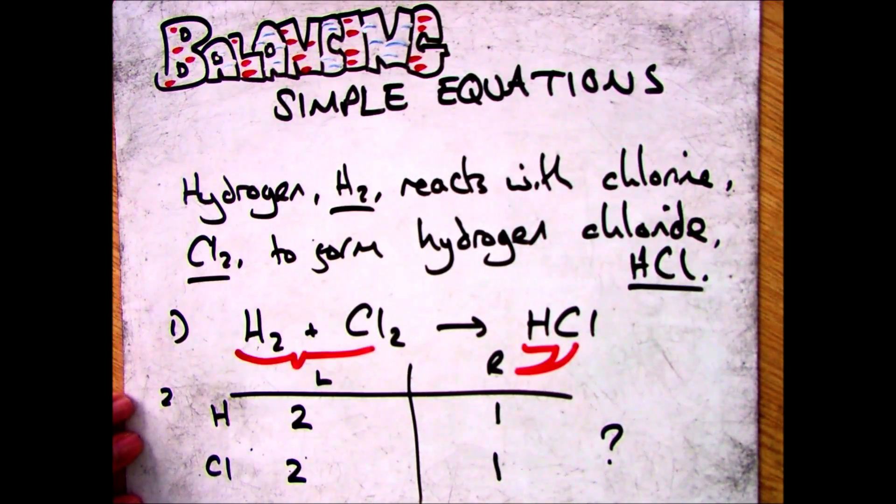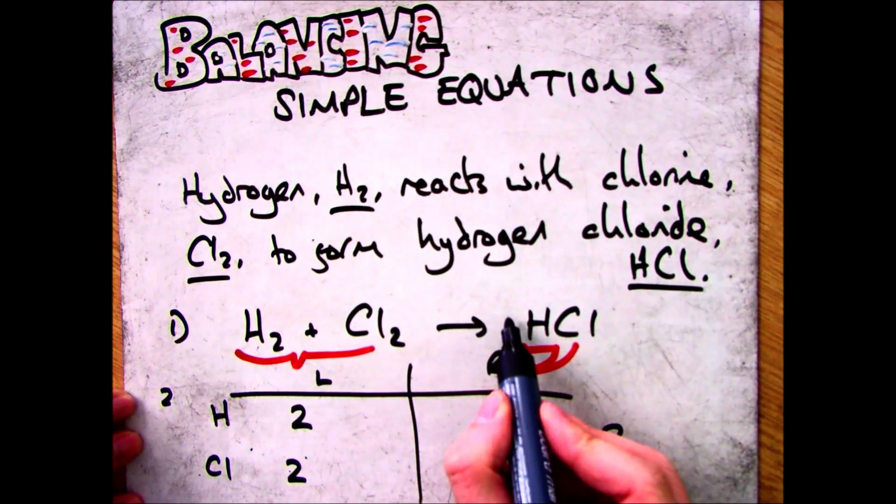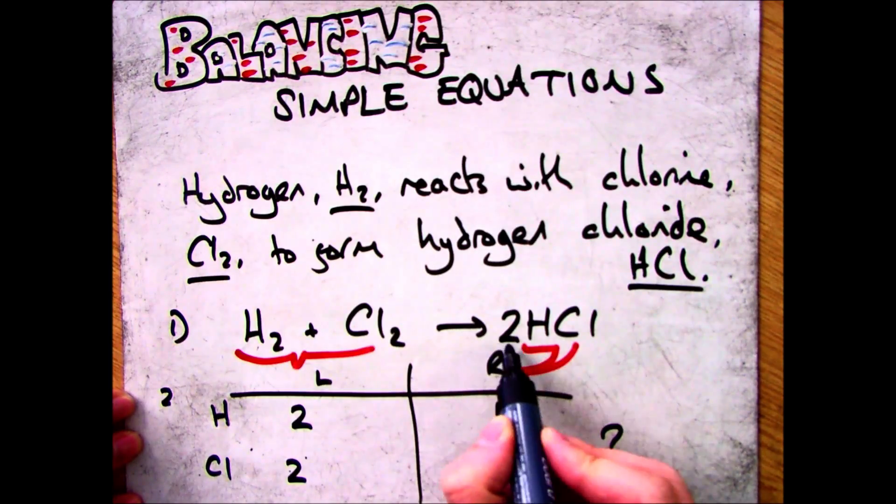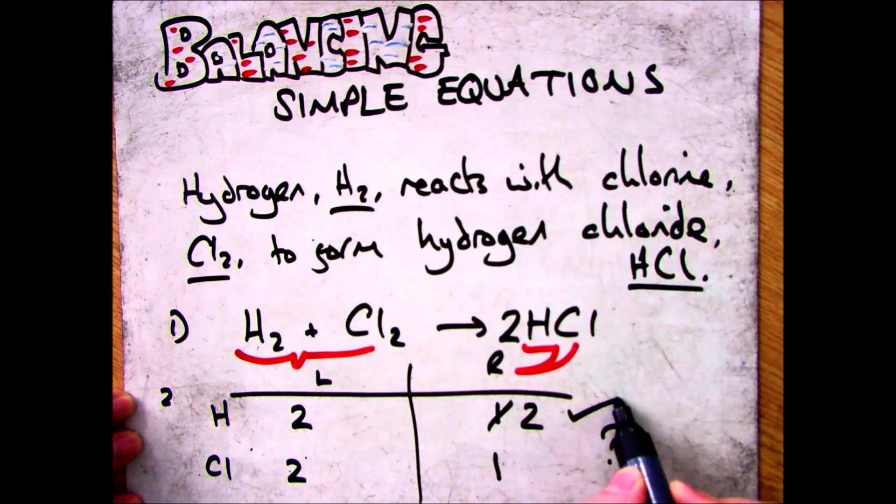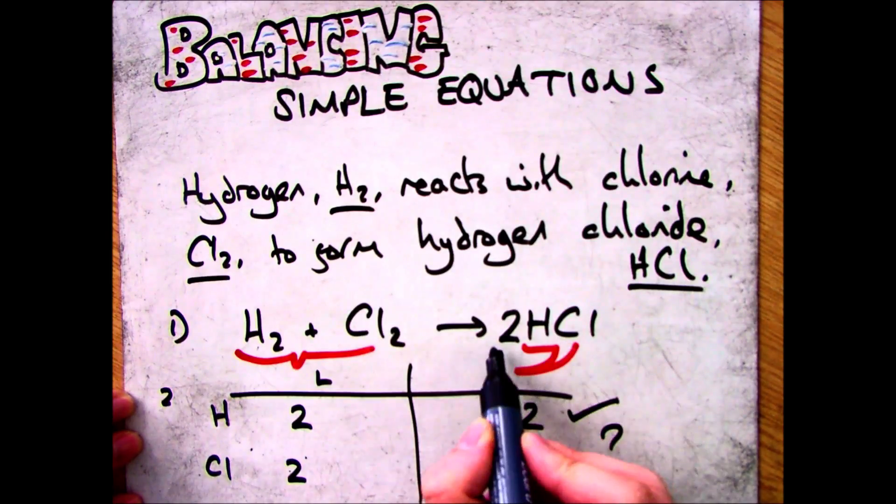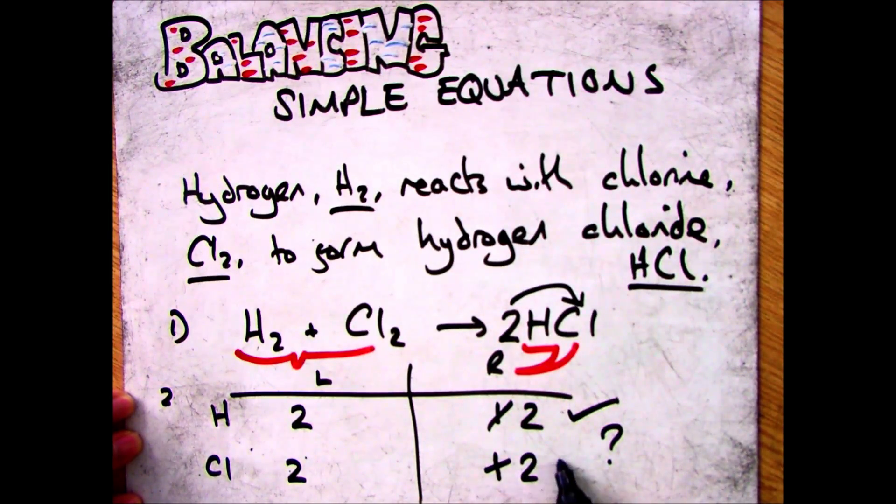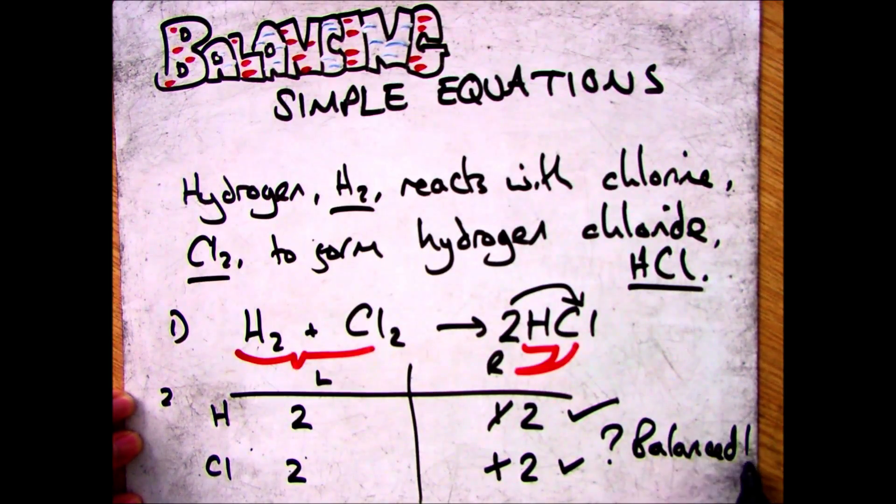The next thing you do is how do you balance it. Well I've only got one on the right, I need two, so you multiply it by two and by doing that it gives me two hydrogens and because it's multiplying everything in the compound it means that I've got two chlorines. Both of them are even on either side so we can now say that this one is balanced.